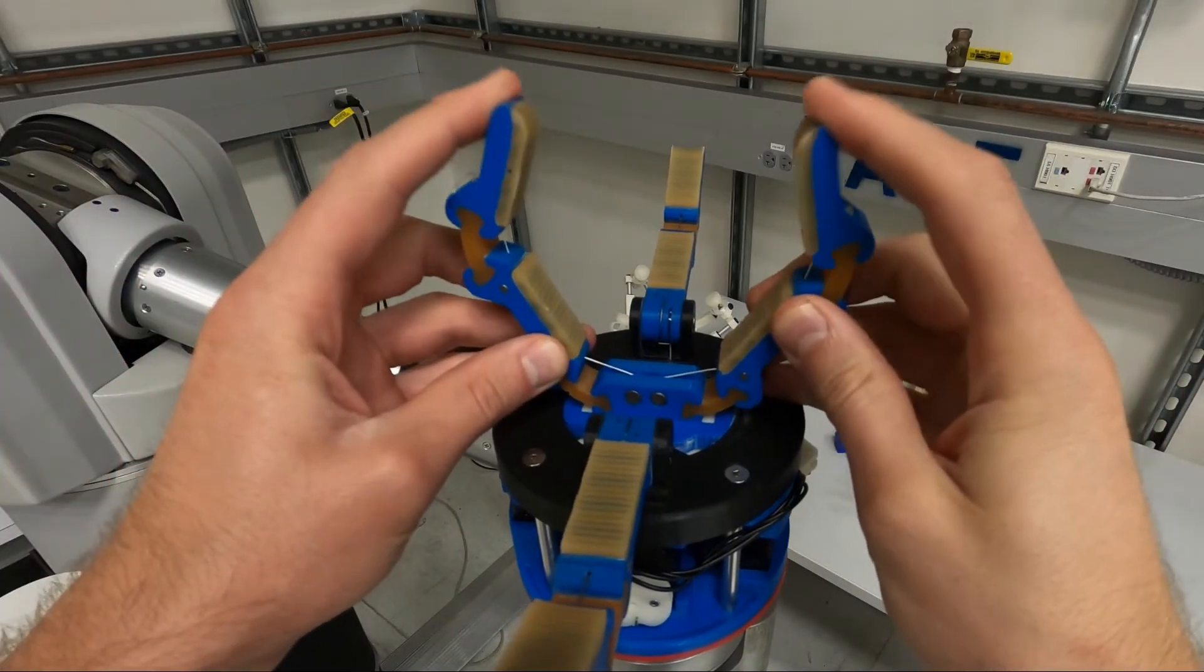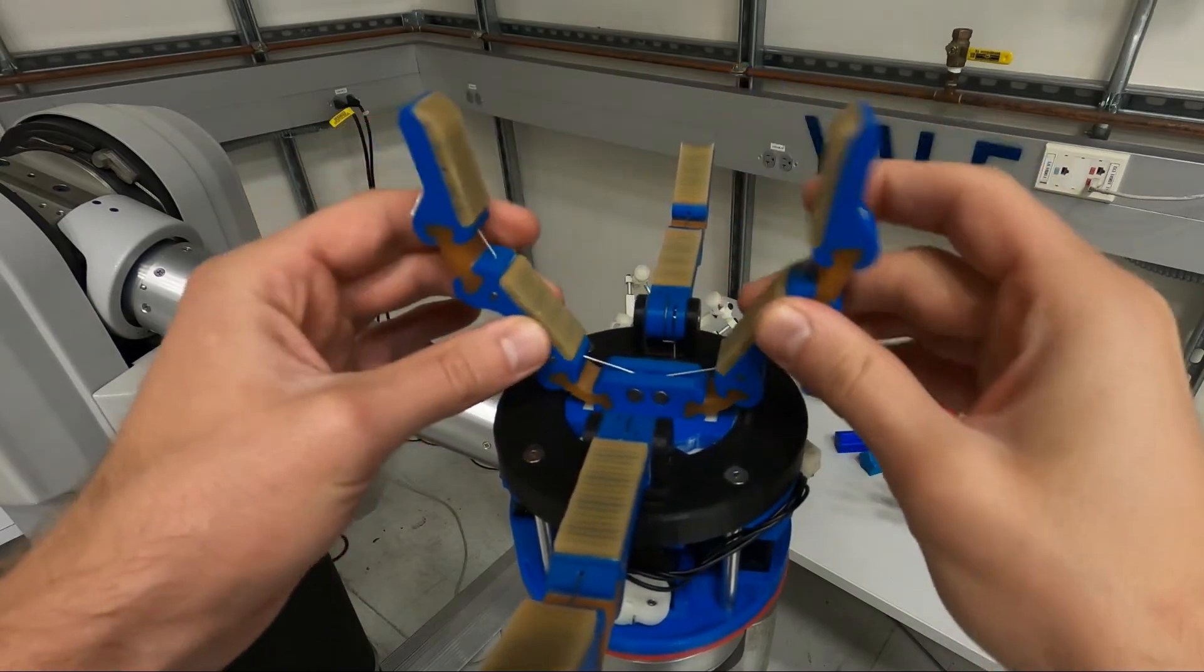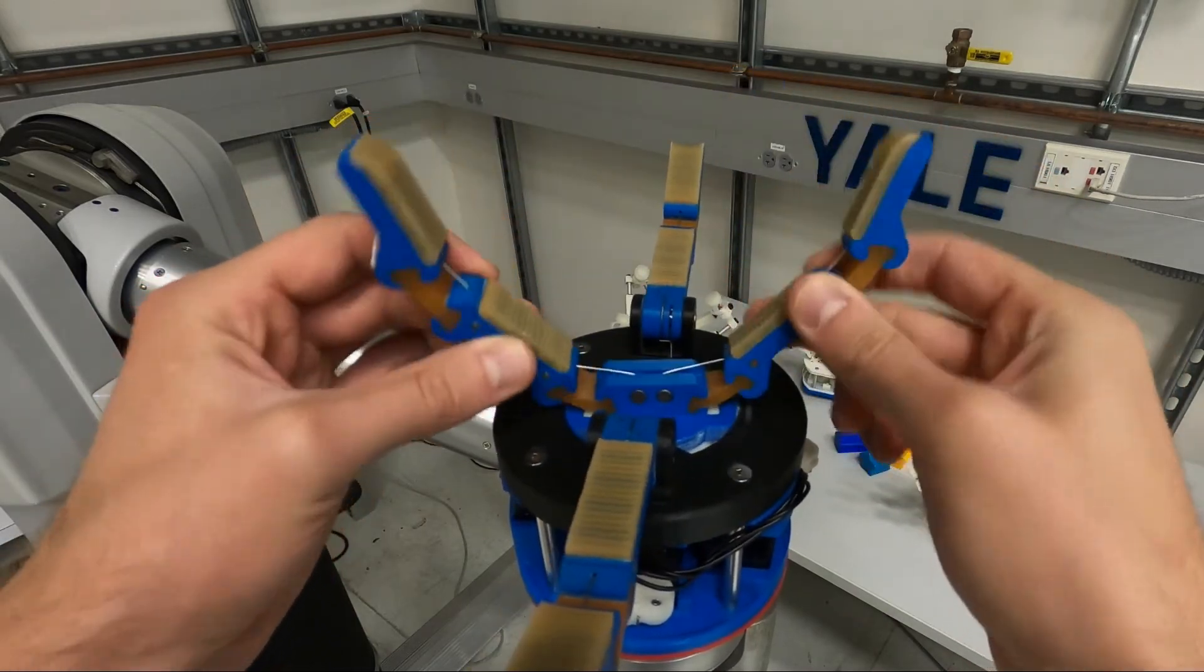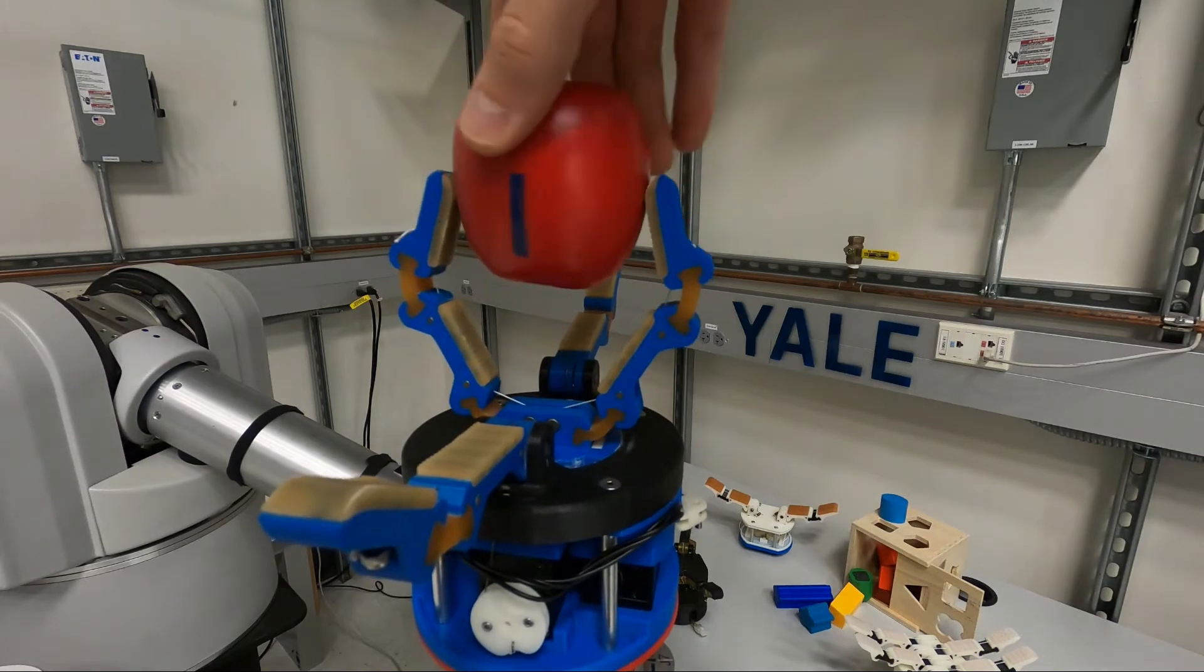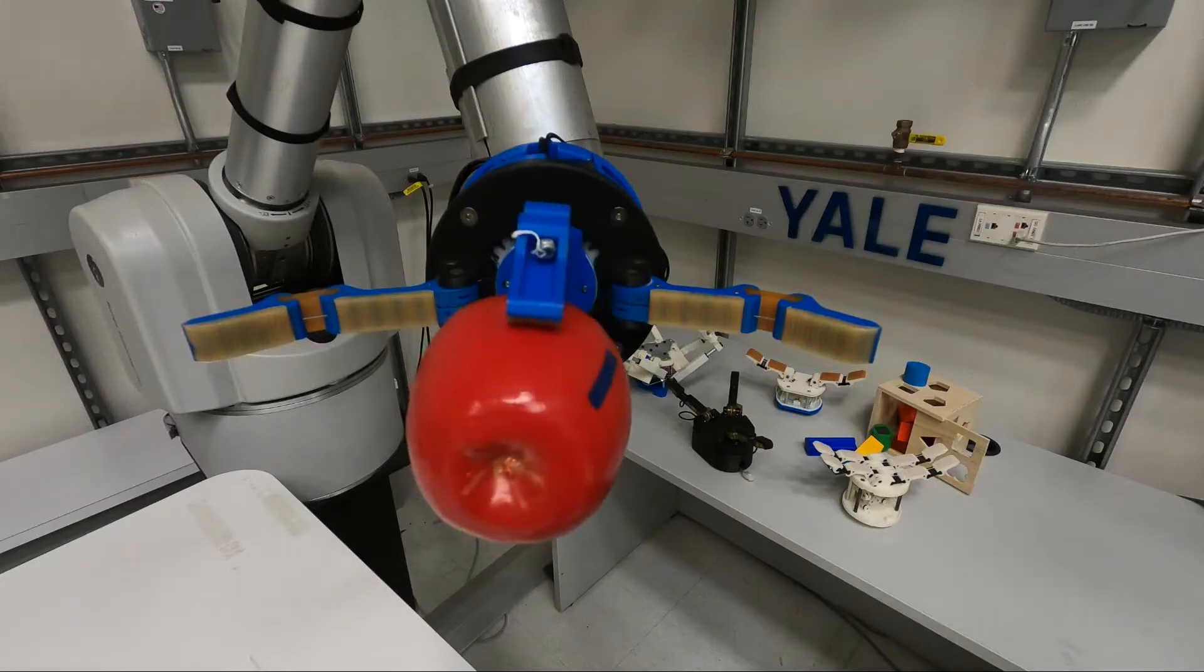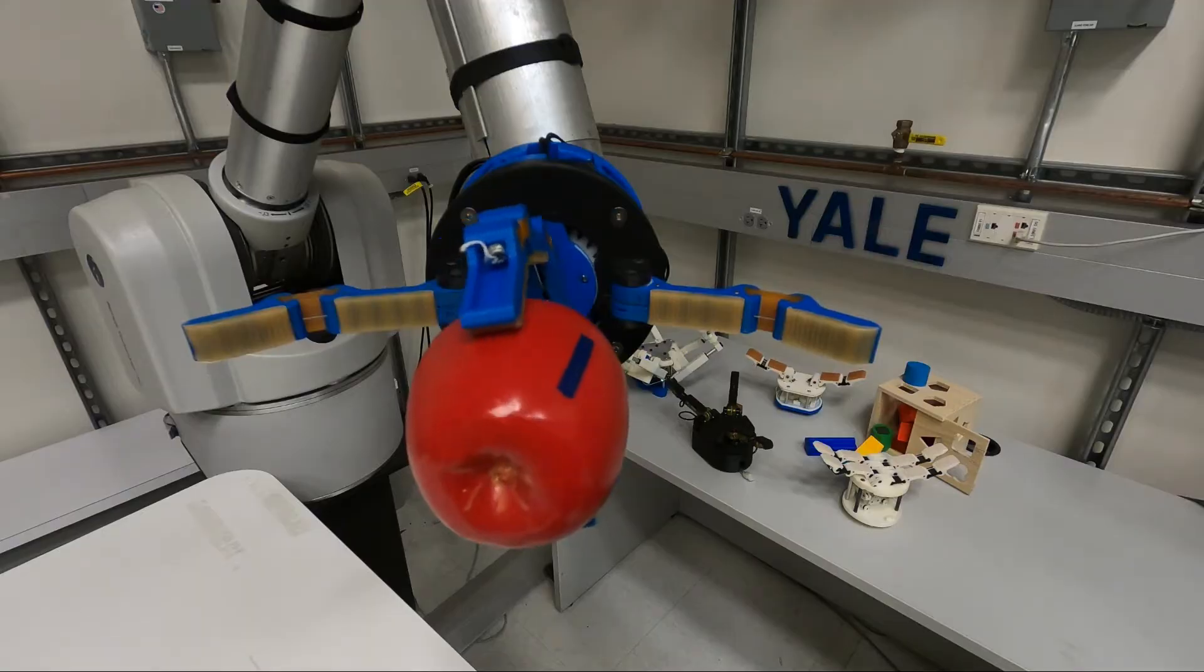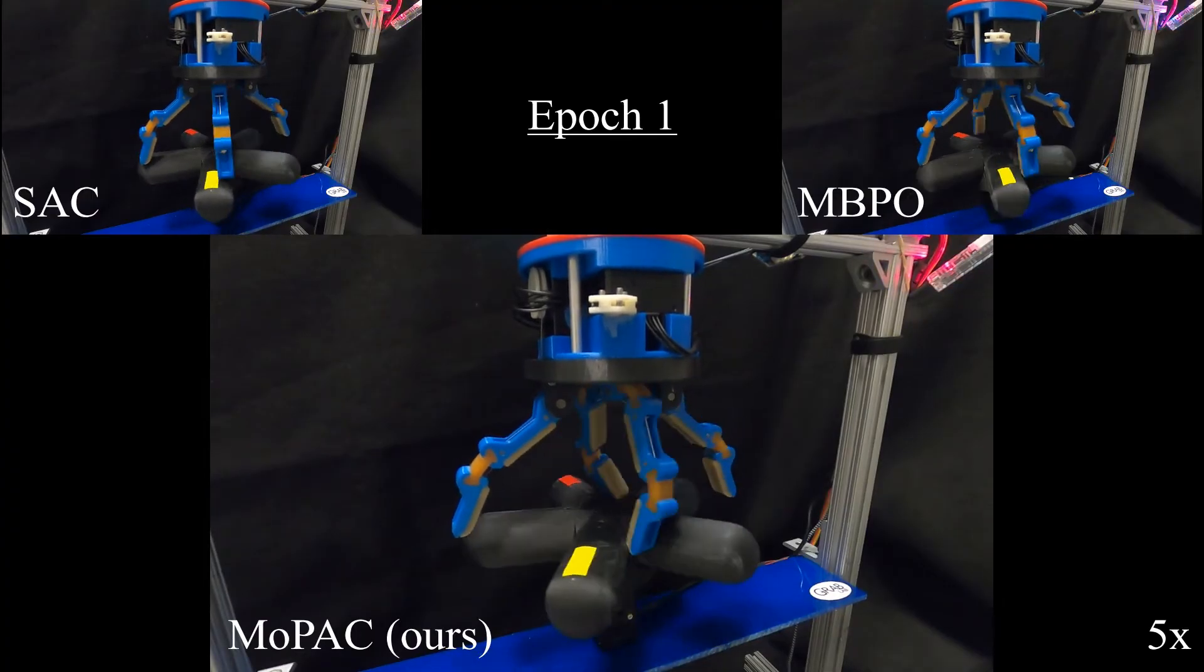MOPAC is tested physically on an underactuated Yale open-hand model Q with four fingers and a rotary palm. The underactuated nature of this hand serves as a challenge to our approach, since the joint configuration and thus the system state cannot be directly determined. All three robot tasks focus on in-hand manipulation.